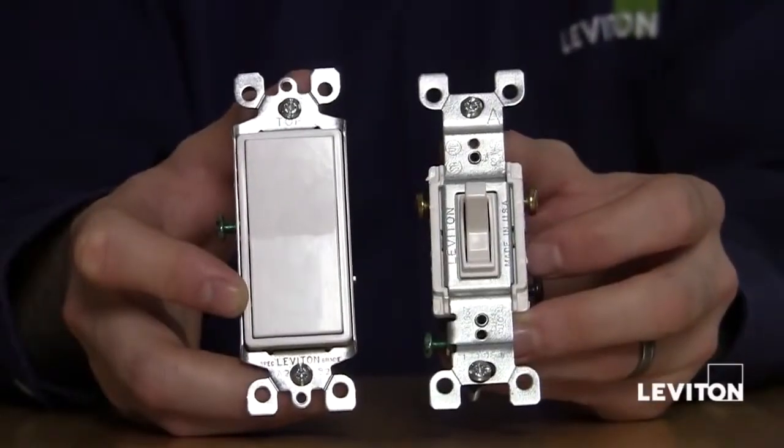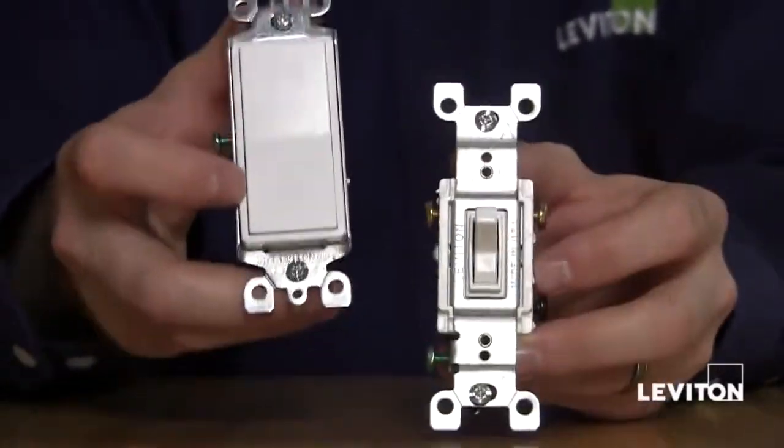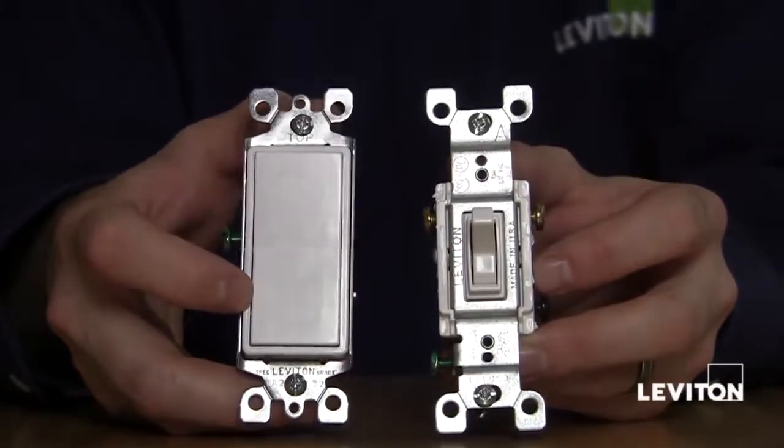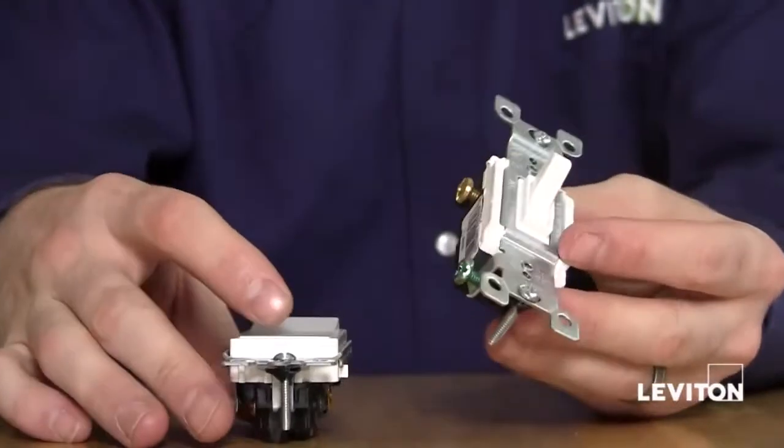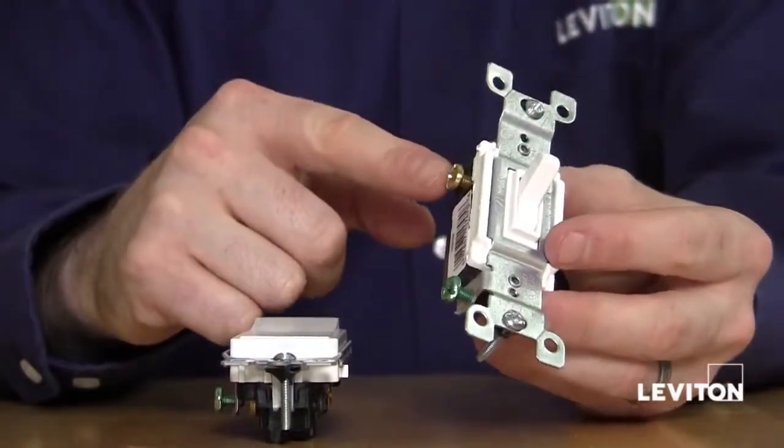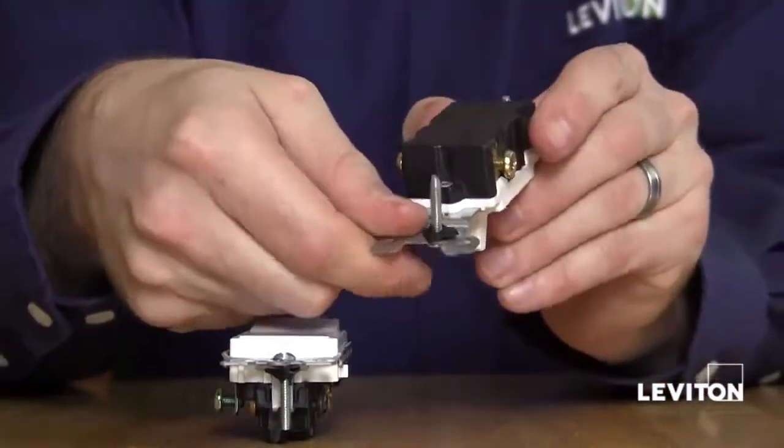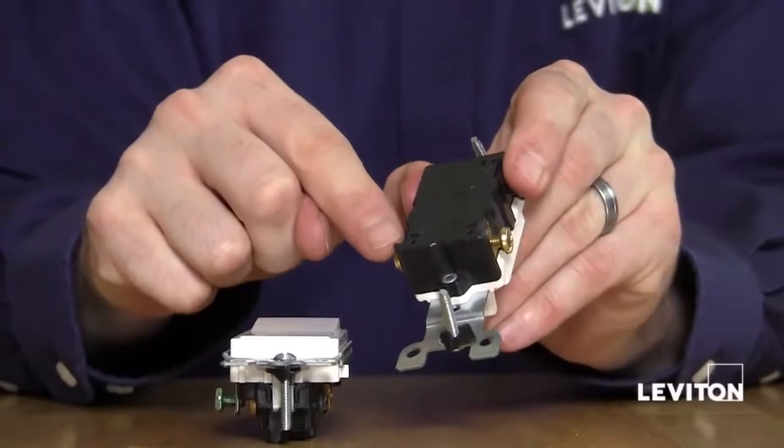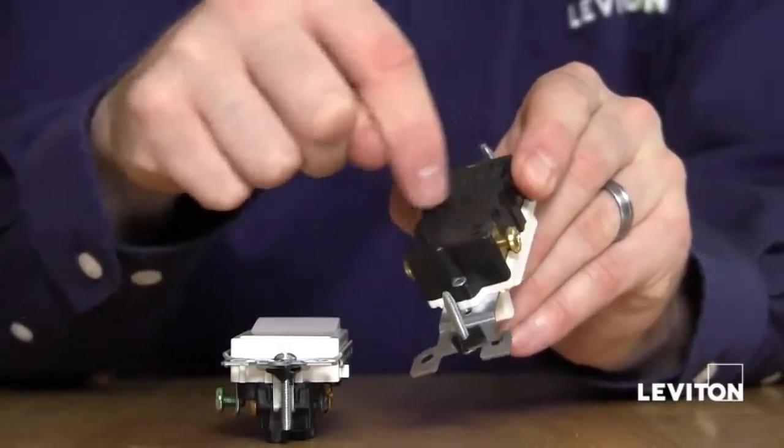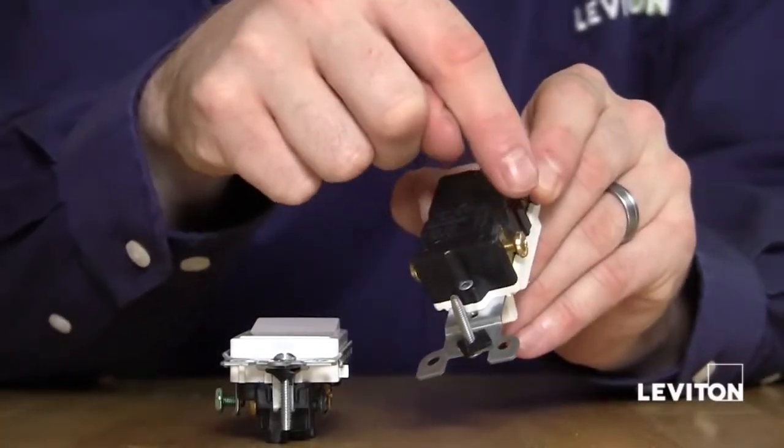So here's how it works. Remember the two traveler wires that go between either switch? One of these wires is always hot. By changing the state of the switch, you actually move power from one wire to the next, internally moving it from one brass terminal to the next.